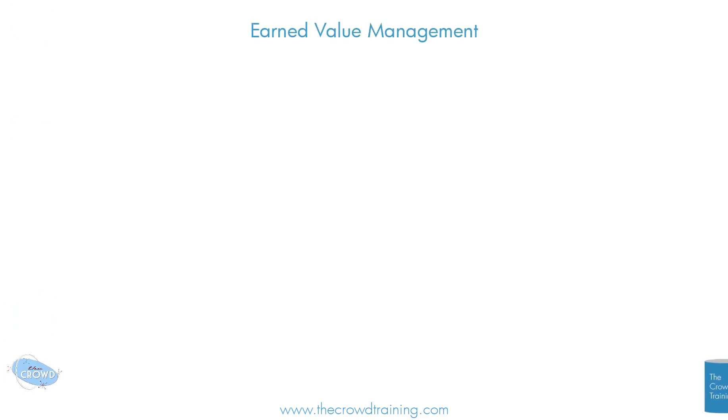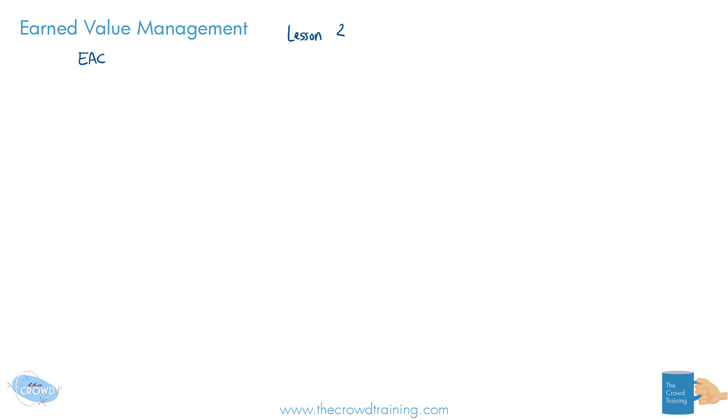Okay, so welcome back. This is the second of the earned value management lessons, lesson number two. In this lesson, we're going to talk about the estimate at completion, forecasting and what could be possible, as well as the variance at completion. We're also going to look at the estimate to complete and the to complete performance index.